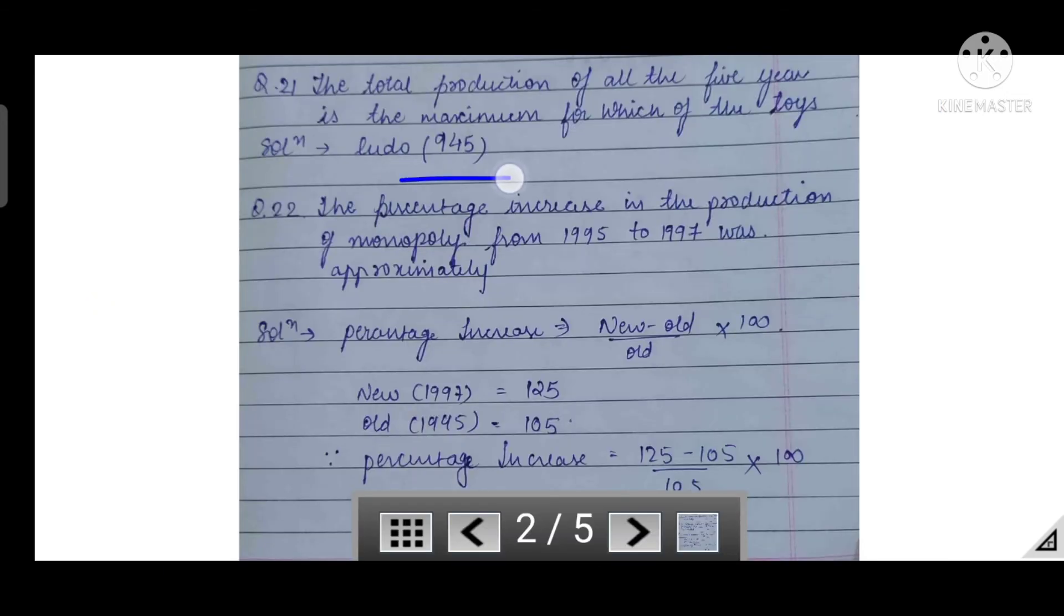When we compare Monopoly, we see Ludo data is higher, which means in the given five years, this is the toy which has got maximum production. The total was 945, so you can rectify it.